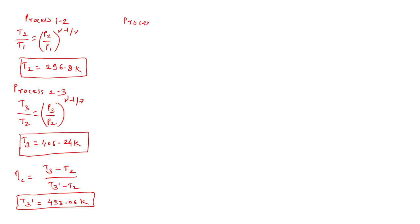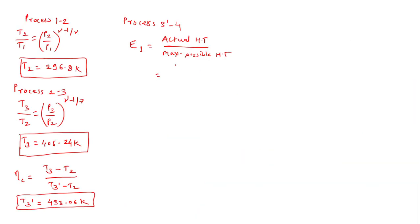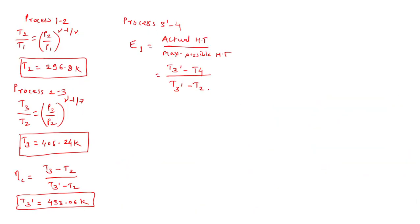The next process is 3-dash to 4, happening in the first heat exchanger. The formula for heat exchanger effectiveness is: effectiveness equals actual heat transfer divided by maximum possible heat transfer. Actual heat transfer is proportional to (T3-dash minus T4), and maximum possible is (T3-dash minus T2), since ram air is used for cooling. The first heat exchanger effectiveness is 0.5. Since T3-dash and T2 are known, T4 can be calculated and comes out to be 364.93 Kelvin.